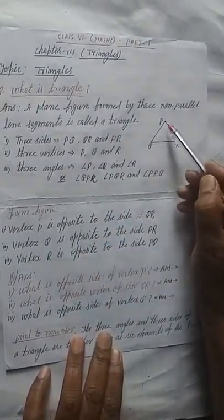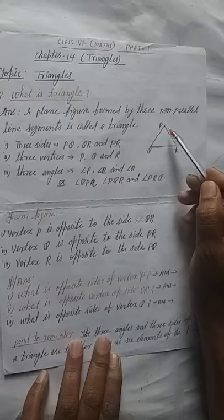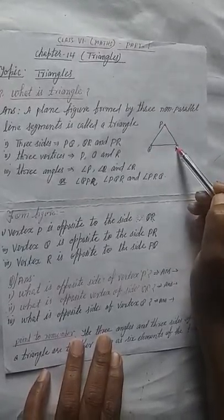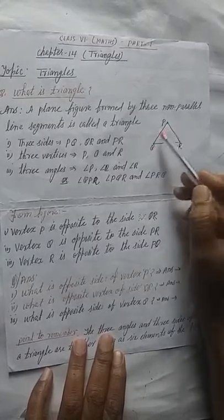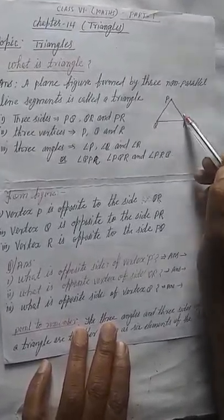Here PQ, QR, and PR are non-parallel line segments. Okay, students? So after joining, we are getting here triangles. So this is the figure of the triangle.